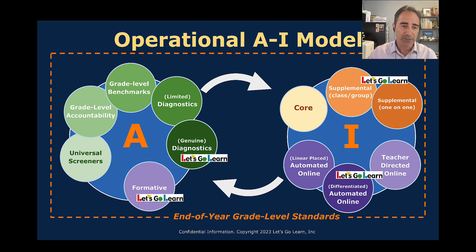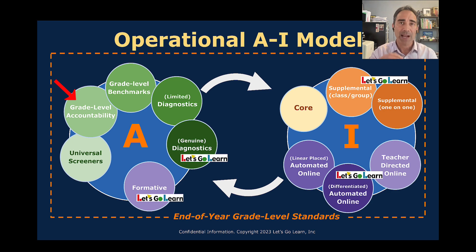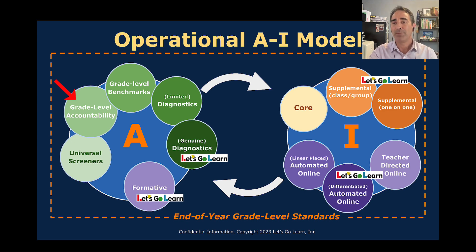The next type is grade level accountability — this is going to be your state test. State tests assess students at the end of each year, testing them only on the material they're expected to have learned by the end of the year. So at the end of third grade, fourth grade, eighth grade, they give items and ask: did they master this or not? The result is an accountability measure — above grade level, proficient, below proficient, or non-proficient — a tiered score relative to their grade level.